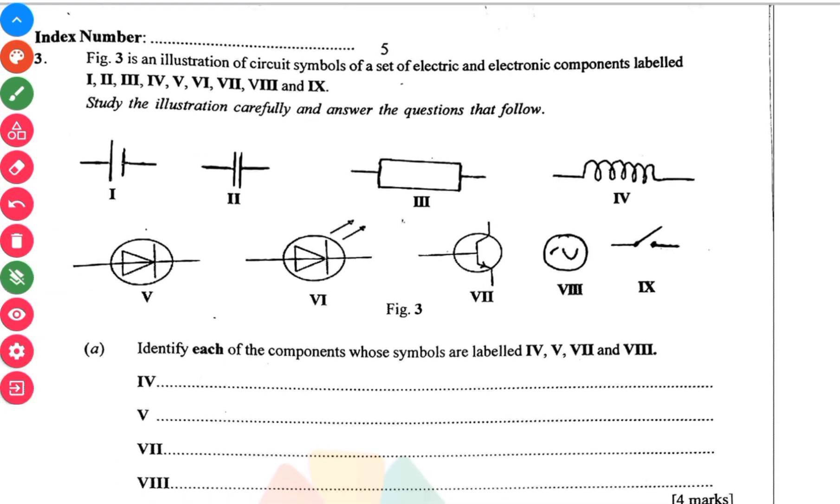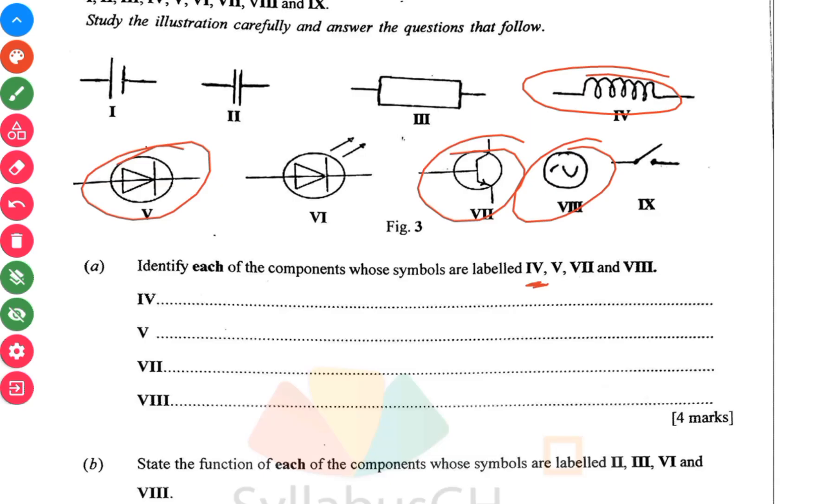Figure 3 is an illustration of circuit symbols of a set of electric and electronic components labeled I to IX. Your IV is a solenoid. Then your V is a diode. Then the VI is a transistor, and your VIII is alternating current source.